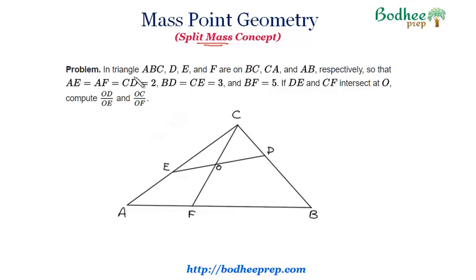The problem says that in triangle ABC, D, E, and F are on BC, CA, and AB respectively. ABC is a triangle, DEF are the respective points on these lines. We have also been given that AE equals AF, which equals CD equals 2. That means this length AE is 2, AF is also 2, and CD is also 2.